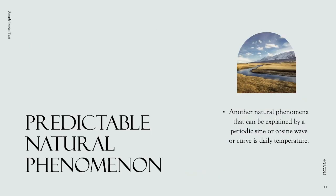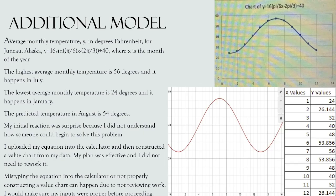Another natural phenomenon that can be explained by a periodic sine or cosine wave is daily temperature. Here's an additional model using temperature: average monthly temperature y in degrees Fahrenheit for Virginia, Alaska is y = 16sin((π/6)x − (2π/3)) + 40, where x is the month of the year. The highest average monthly temperature is 55.56 degrees in July, the lowest is 24 degrees in January, and the predicted temperature in August is 54 degrees.